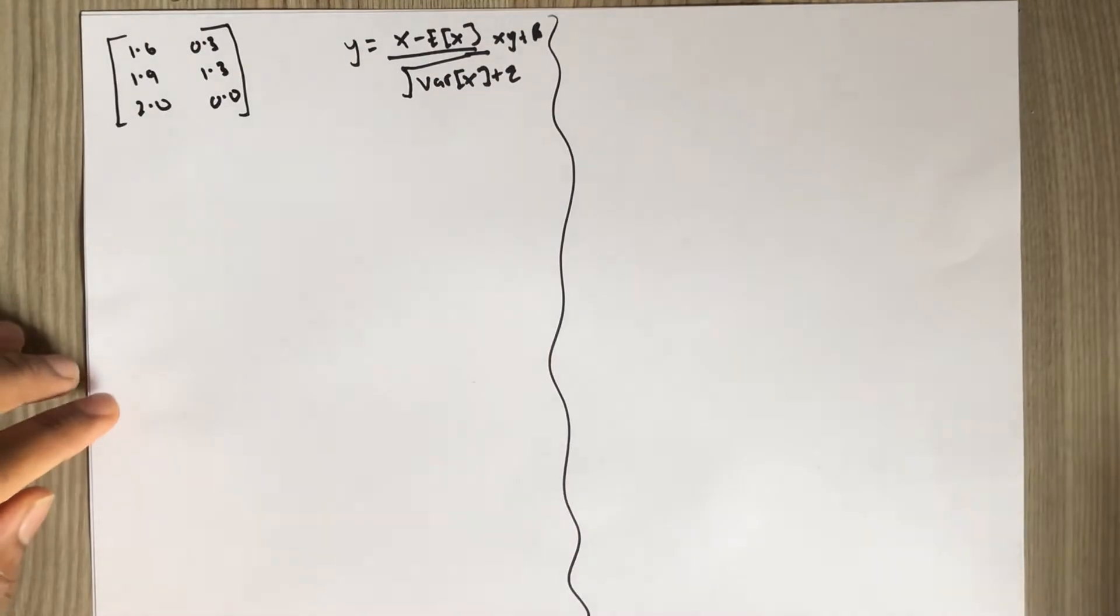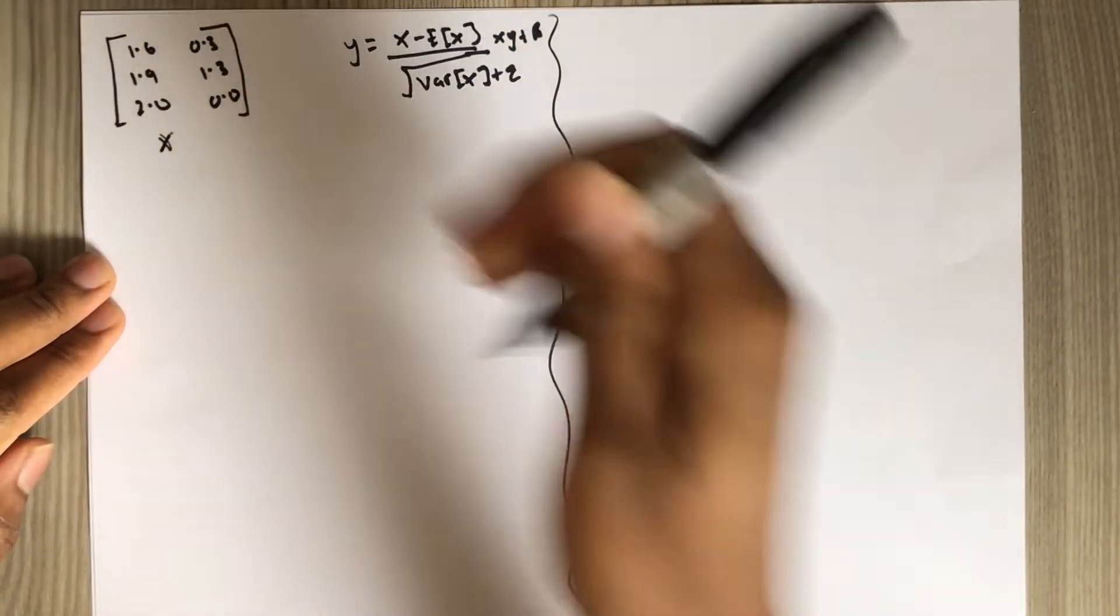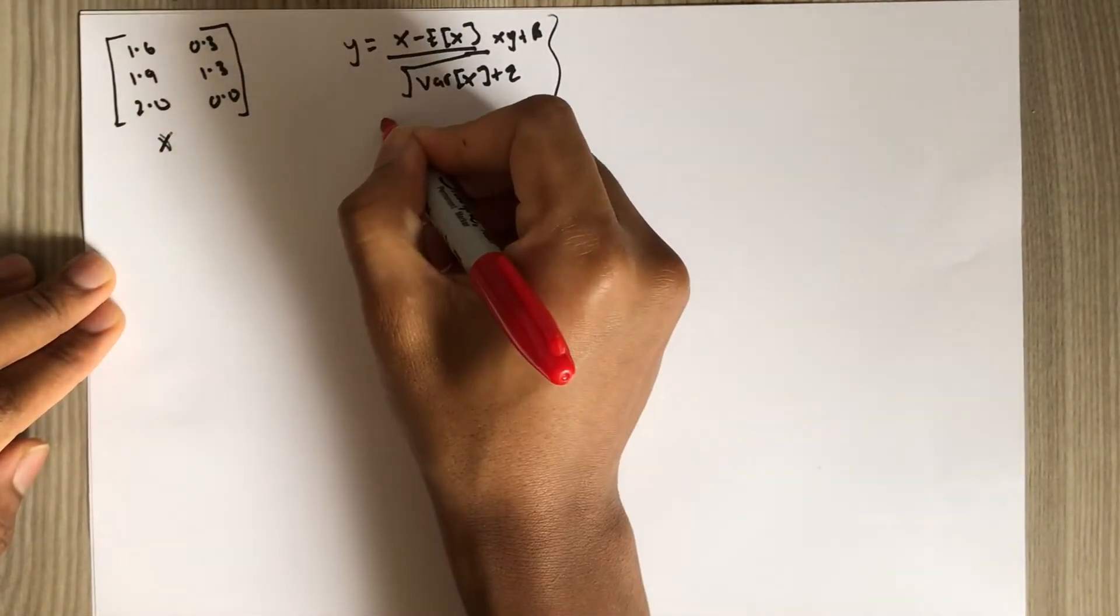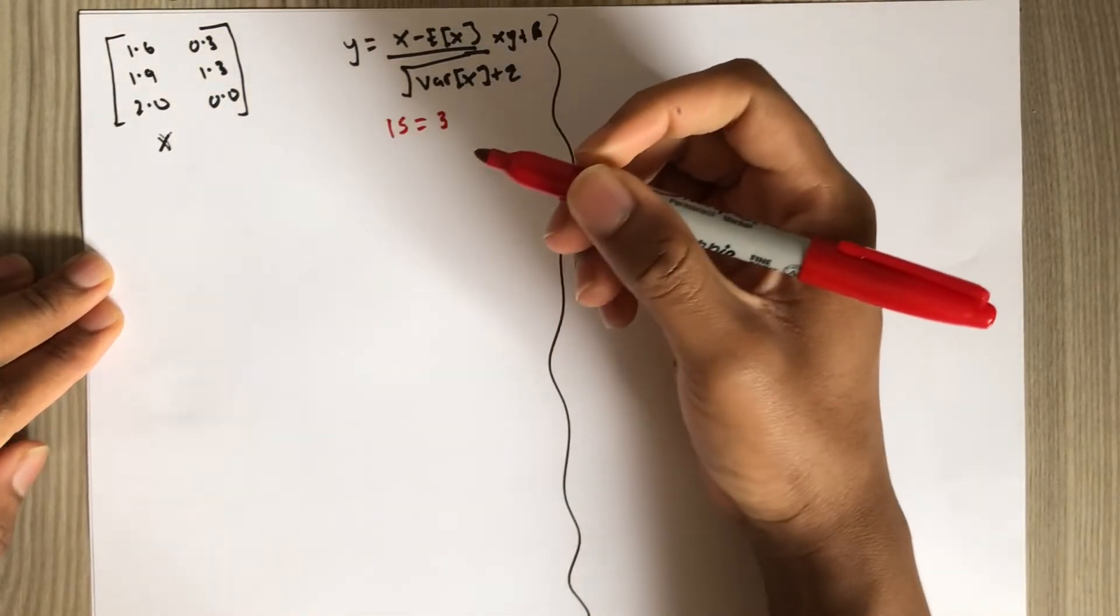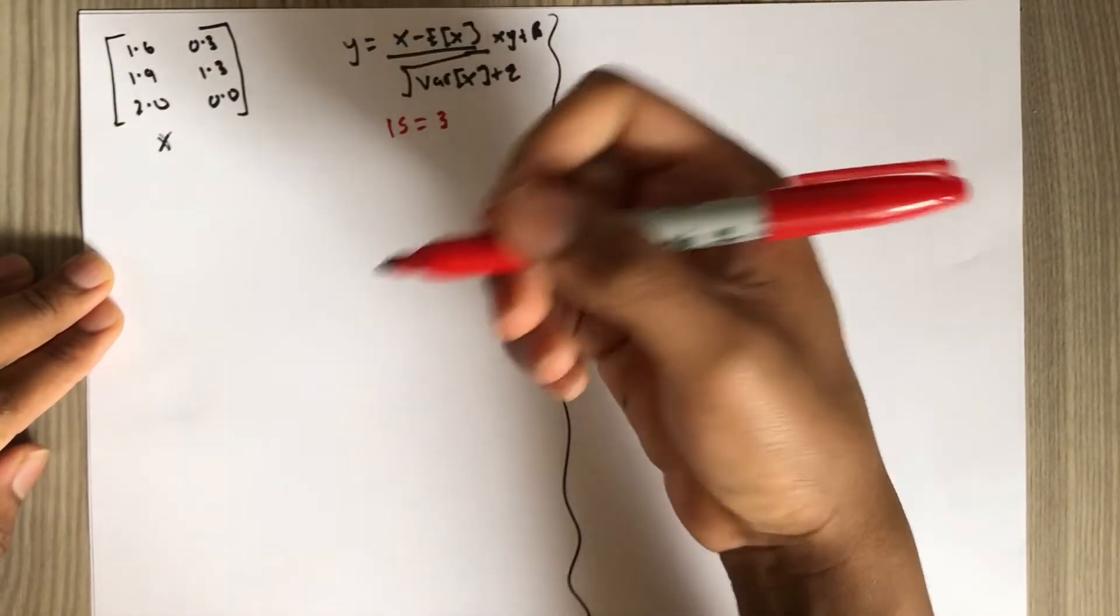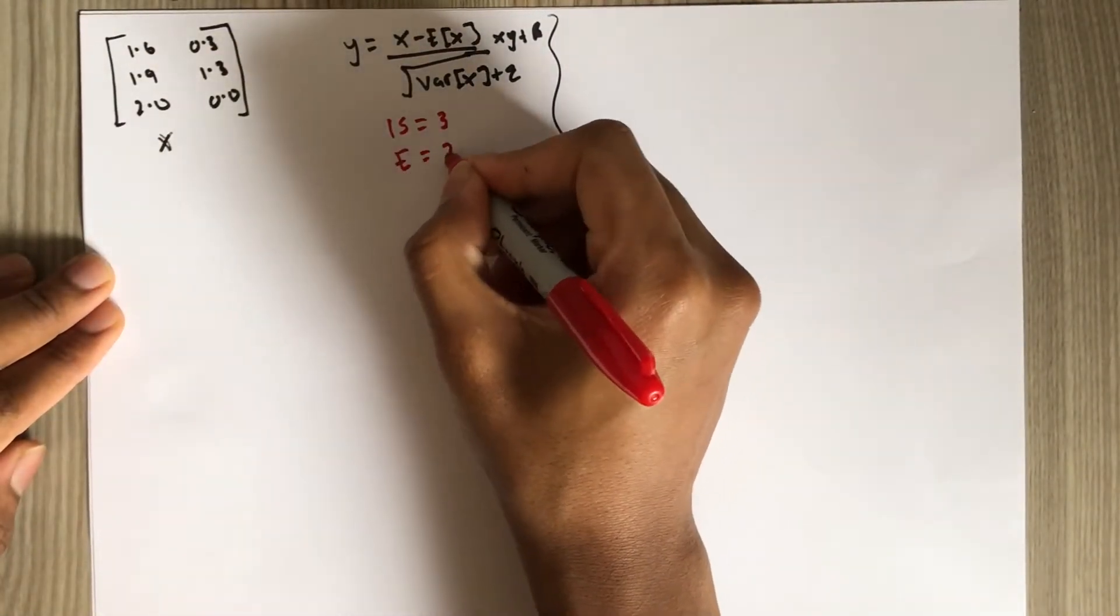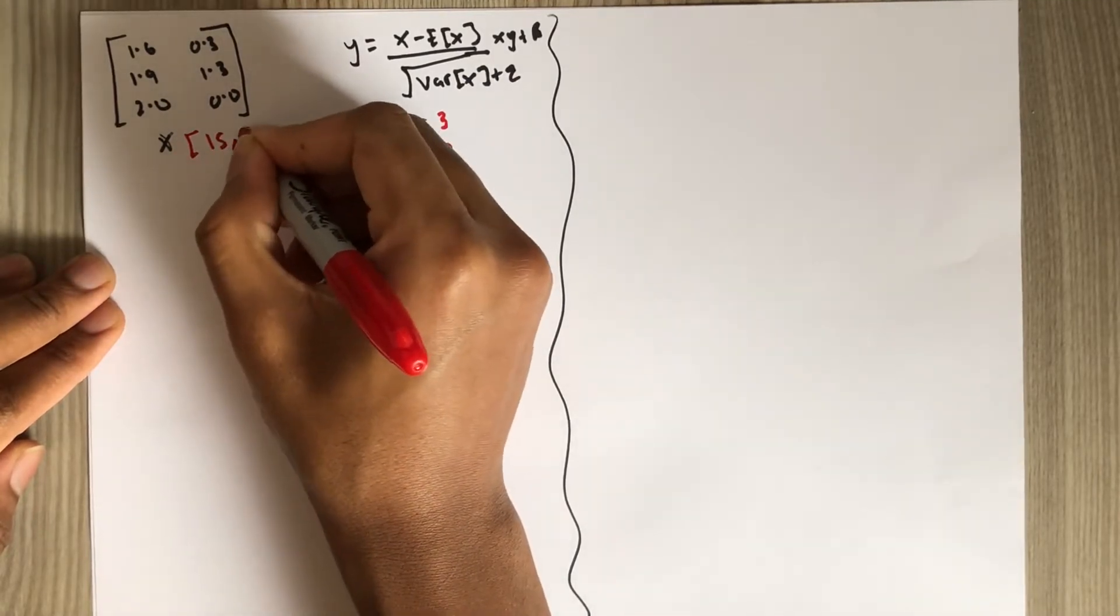And this is x, right? If you can remember, we had is, is was 3, kind of input size, number of words in your input sentence. And we had e, which was 2. So the dimension of x is still is by e.